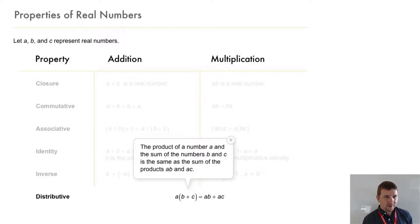And finally the distributive property which is sometimes called the distributive property of multiplication over addition can be grouped in both categories and it can be written that a times the quantity b plus c equals a times b plus a times c.